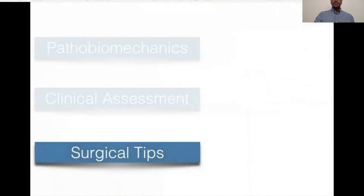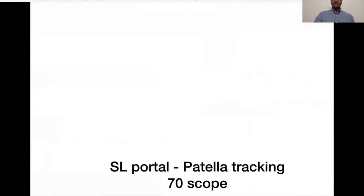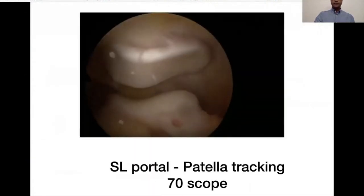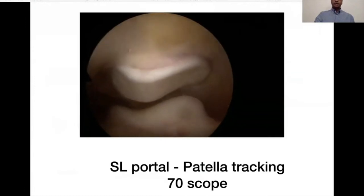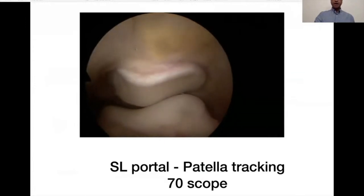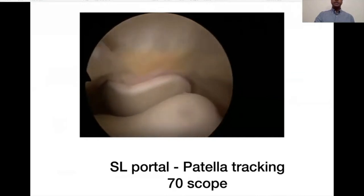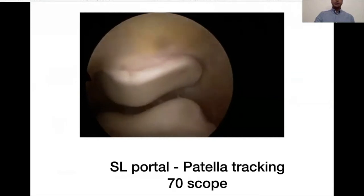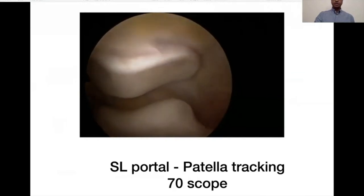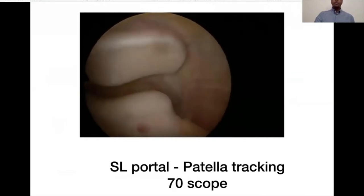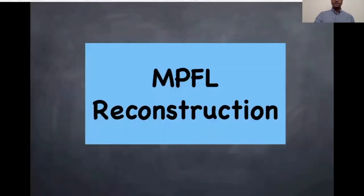Let's look at some surgical tips. If you look at the patellofemoral joint through the supralateral portal — in my case using a 70-degree scope — it gives absolutely brilliant visualization of the patellofemoral joint, how the patella is tracking, and how it is related to the trochlea.